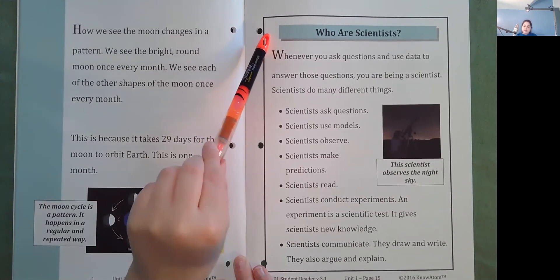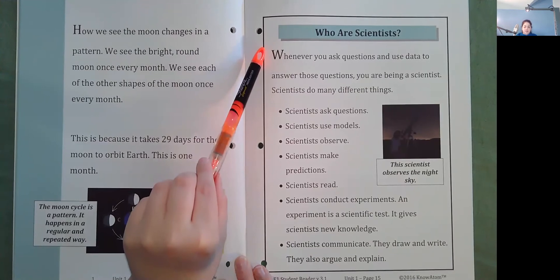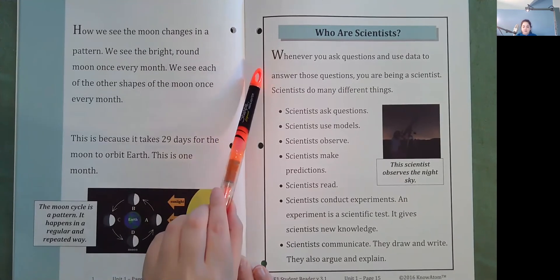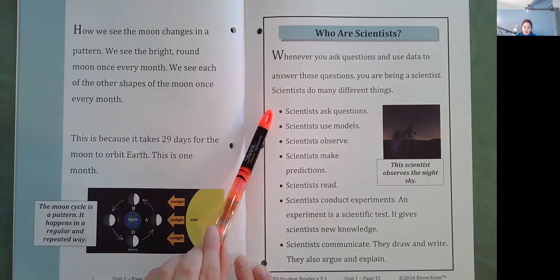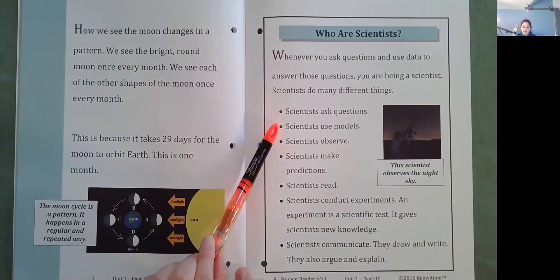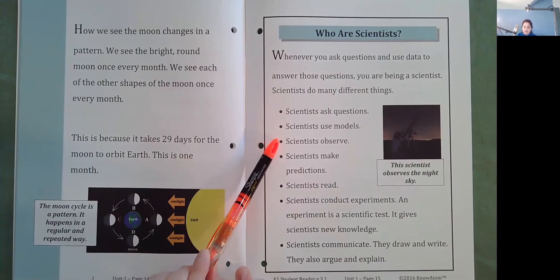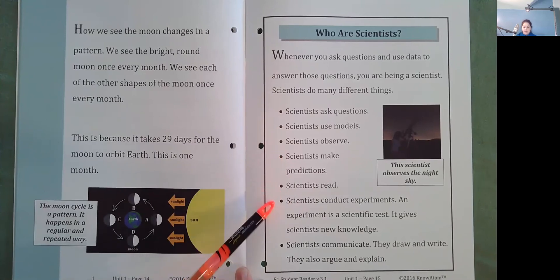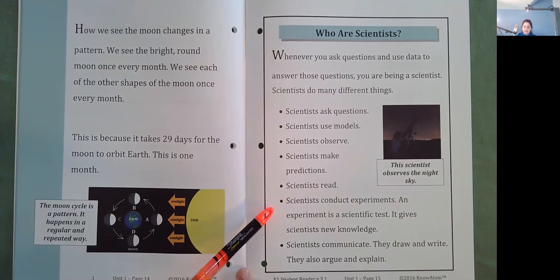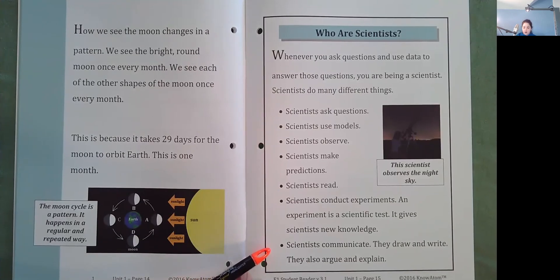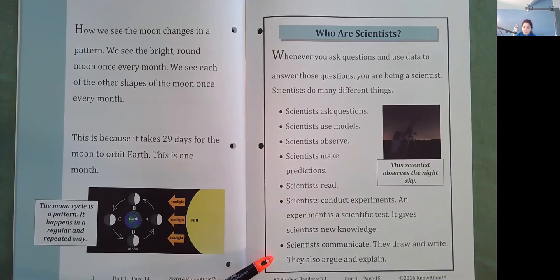Who are scientists? Whenever you ask questions and use data to answer those questions, you are being a scientist. Scientists do many different things. Scientists ask questions. Scientists use models. Scientists observe. Scientists make predictions. Scientists read. Scientists conduct experiments. An experiment is a scientific test. It gives scientists new knowledge. Scientists communicate. They draw and write. They also argue and explain.